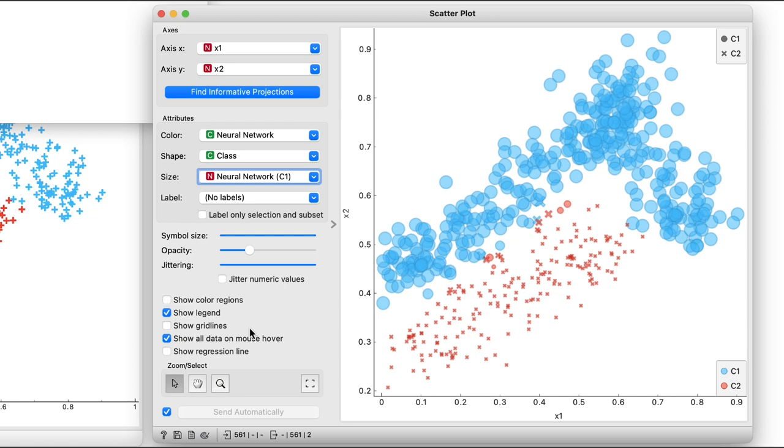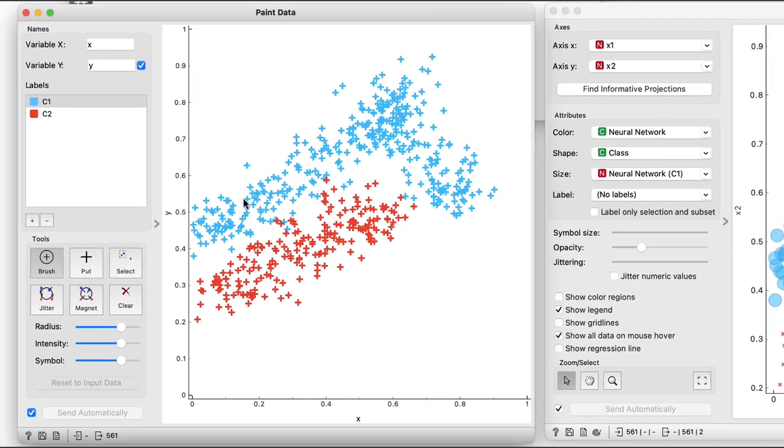I can, however, easily construct a data set where my network will fail. Let me just paint another set of blue points here.